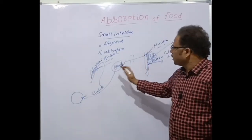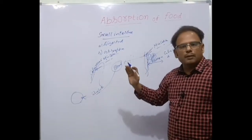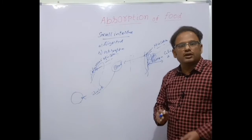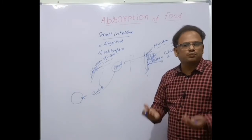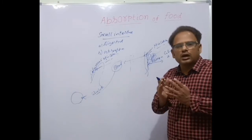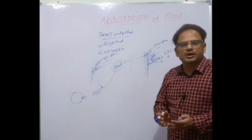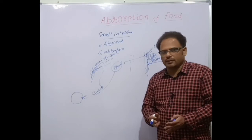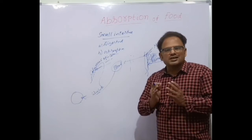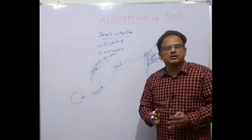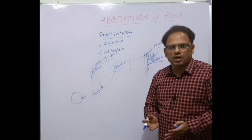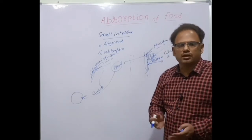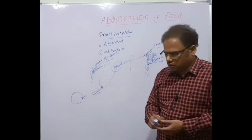So particles like glucose and other food particles need to be transported to the cells. The absorption of the digested food particles occurs by special transport mechanisms. What is that special transport mechanism? How is this done? Let's discuss now.